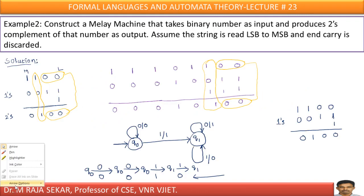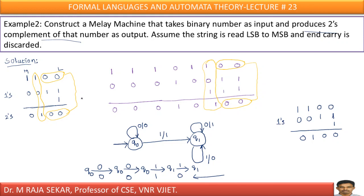Example 2: Construct a Mealy machine that takes a binary number as input and produces two's complement. In the previous example, we discussed one's complement. Now we will try to understand two's complement. This lecture is already explained for Moore machine. Before understanding this, just try to understand the Moore machine example for how to find two's complement.